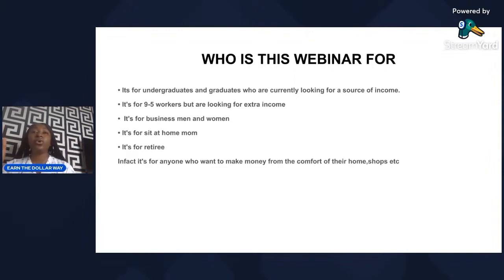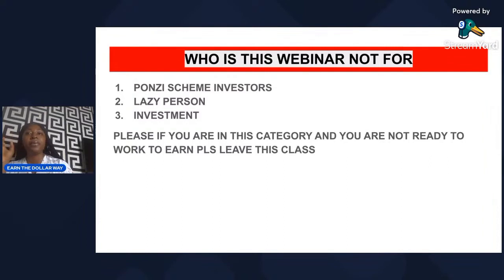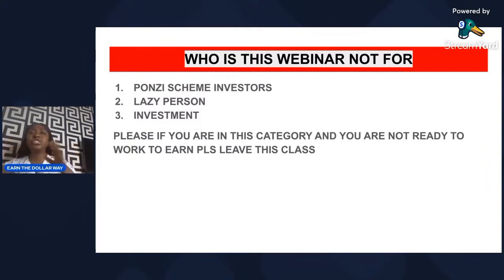This webinar is NOT for three categories of people. First: Ponzi scheme investors — if you're looking for a business where you just invest and watch your money double, this is not for you. Second: lazy people — there's a slogan I use: 'Person wey go chop, go walk.' If you know you can't work, this business is not for you. Third: passive investors — people who want to pay someone a percentage to publish books for them. This business is only for people ready to work.